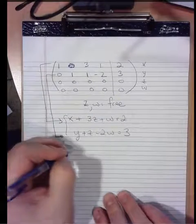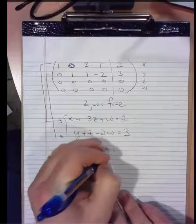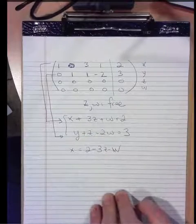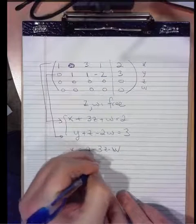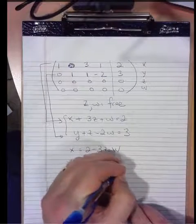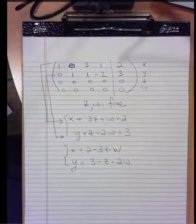Solve these for x and y. x equals 2 minus 3z minus w, y equals 3 minus z plus 2w. And now we know the characteristics of the system.